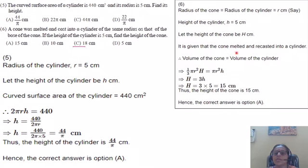If it is given that cone is melted and recasted into a cylinder, so volume remains the same. Therefore, volume of cone and volume of cylinder, it is equal.